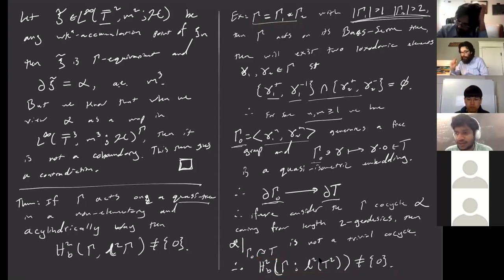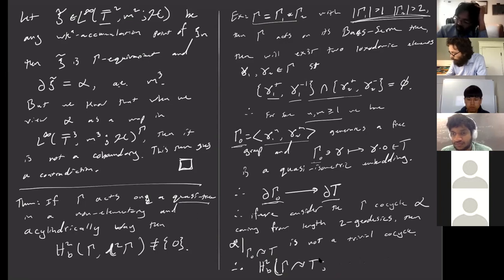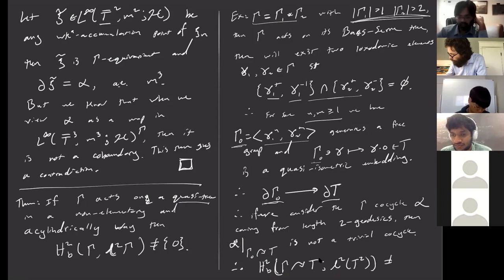Also, γ acts freely on this. Because γ acts freely on the Bass-Serre tree, the cohomology for the action on the tree is trivial. The remark is: because it's the Bass-Serre tree, gamma acts freely on it. So we get that it's the cohomology with coefficients in L²(Γ). We'll prove this more precisely later.